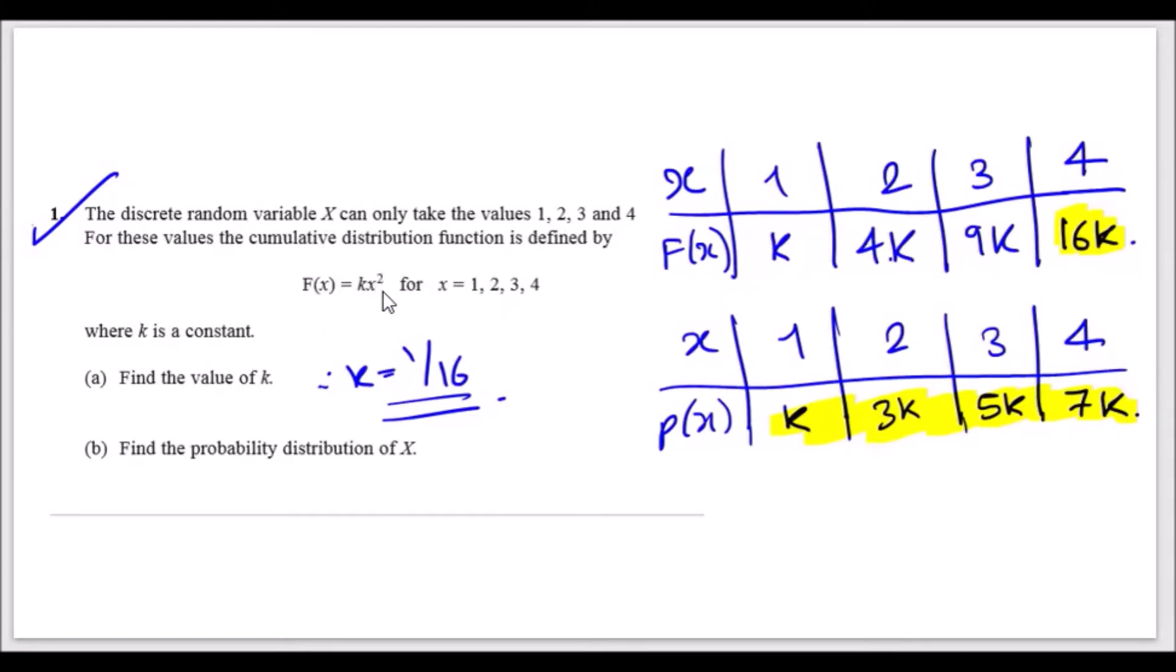F(x) equals kx squared for x equals 1, 2, 3, and 4. Essentially what this means is that it's probably comfortable to always draw a cumulative distribution function table over here and simply put your values for x, which is 1, 2, 3, and 4, and start plugging in into the equation.